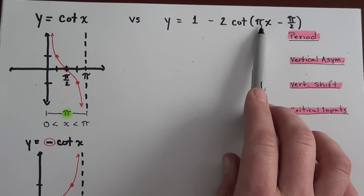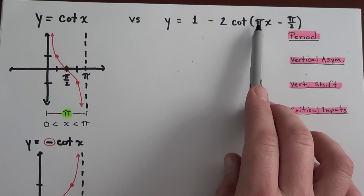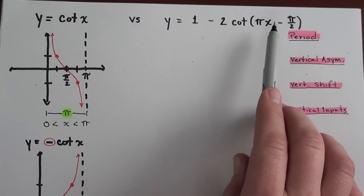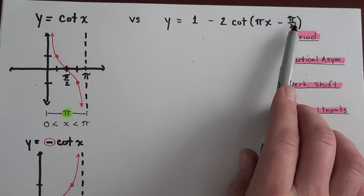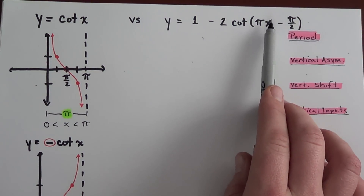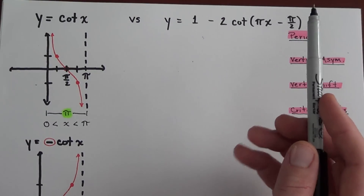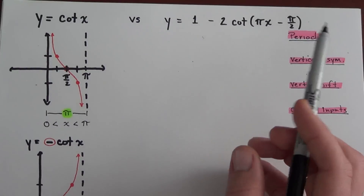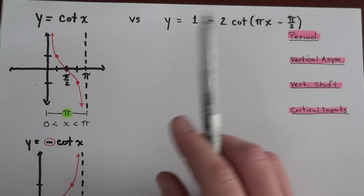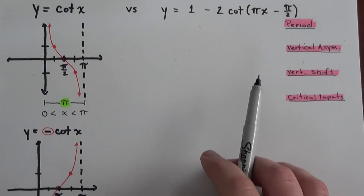What you need to know is that the coefficient of x, if it's anything but one, your period will be altered in some way. Also, if I have some sort of addition or subtraction inside of the cotangent function, this will shift the graph's original period either left or right. If it's a negative, it will shift to the right.